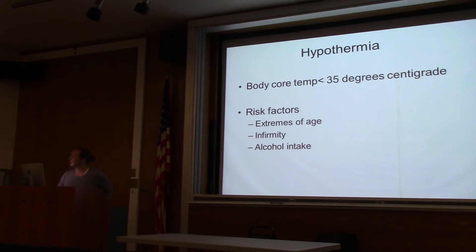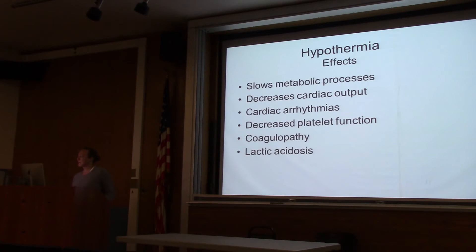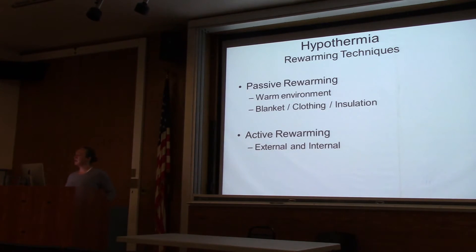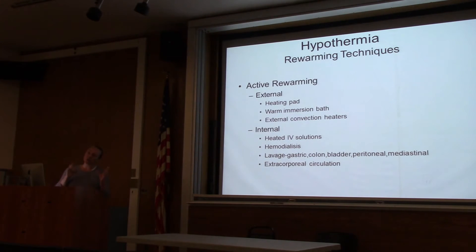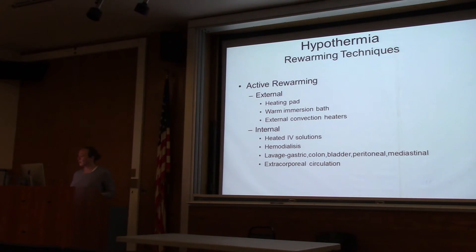Hypothermia is defined as a body core temperature below 35 degrees centigrade. People at greater risk are the elderly, children, the infirm, and the intoxicated. There are two types of rewarming: passive rewarming — placing the patient in a warm room with blankets, clothing, and insulation — and active rewarming, which can be external (heating pads, warm immersion bath, convection heaters) or internal (warm IV fluids by microwaving a 1-liter bag for one minute, warm fluids via NG tube or Foley catheter, warm water into pleural spaces via chest tubes, hemodialysis, or cardiopulmonary bypass).